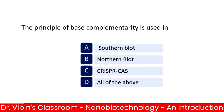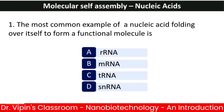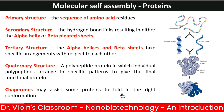The principle of base complementarity is used in Southern blot, Northern blot, and CRISPR-Cas — in all these cases you are using the principle of base complementarity between complementary strands, i.e., the principle of hybridization. The most common example of a nucleic acid folding over itself to form a functional molecule is transfer RNA, not mRNA.